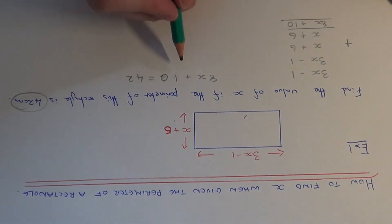To solve the equation, first we need to get rid of the plus 10. We can do this by subtracting 10 from both sides. This will give us 8x equals 32.